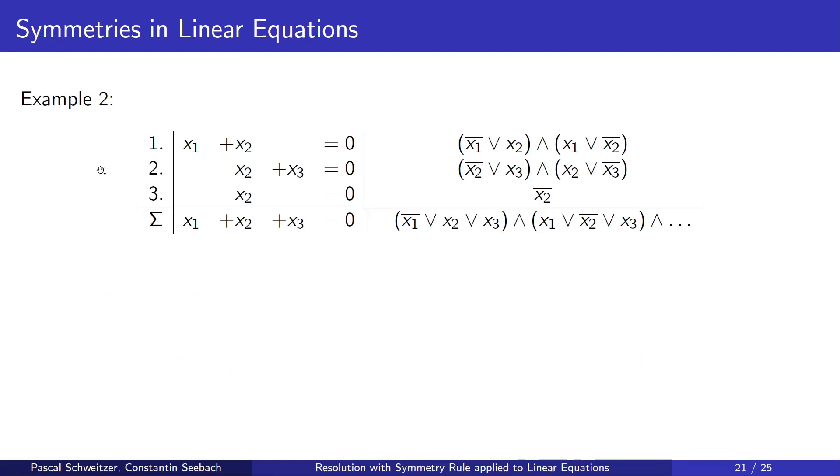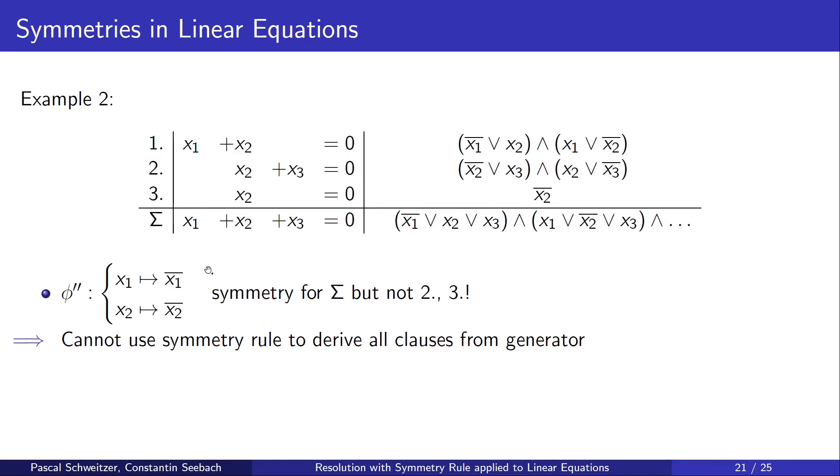Another example. Here we want to add three equations together. And here we want to use this symmetry of the sum equation. But it's not a symmetry for equations 2 and 3. And we also can't fix this problem by extending the symmetry. However, we observe that every clause of sigma has a sub clause in one of its summands. That means that stronger clauses already exist. And that means that we don't actually need to derive the clauses of sigma. And we are already done.